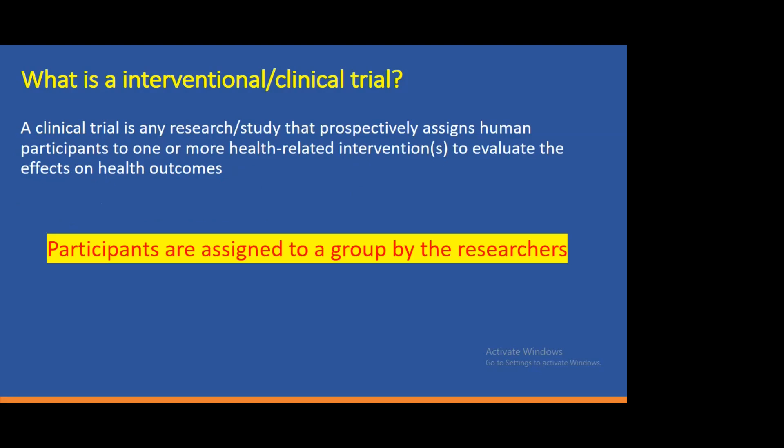The crux of any trial is that assignment to the treatment arm is decided by the trialist, not by the patient. If you have two possible treatments A and B, the patient has no right or option to choose between A or B - it is the trialist who decides which treatment they will get. Whether the patient knows it or not is a different issue. If the patient knows what treatment they are getting, it will be an open-label trial; if not, it will be a blinded trial. Which treatment a participant gets is not decided by the participant - that is the most important point.